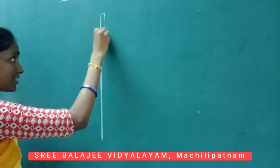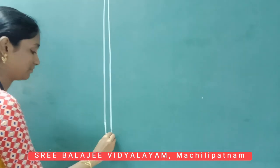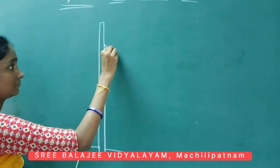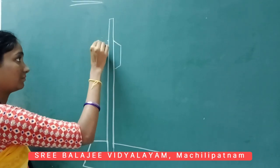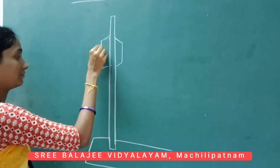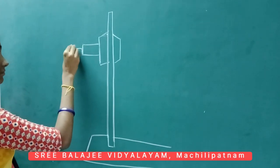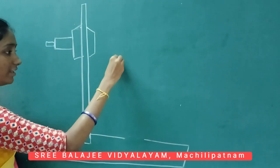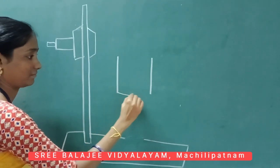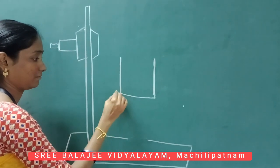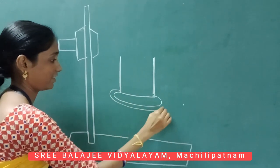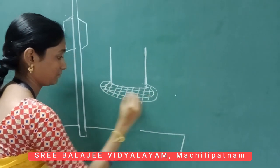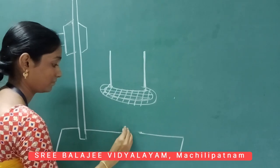First we draw the retort stand. After that we draw a glass beaker. Below the glass beaker we arrange an iron gauge. Now we draw the retort stem.